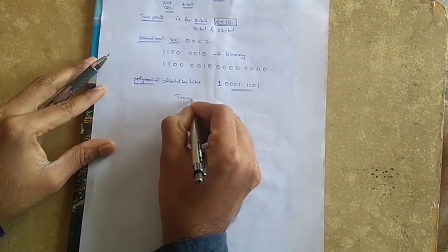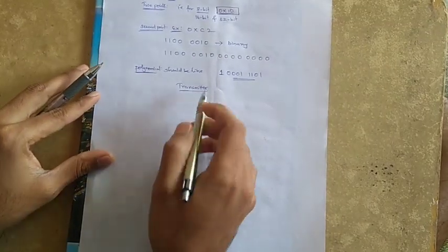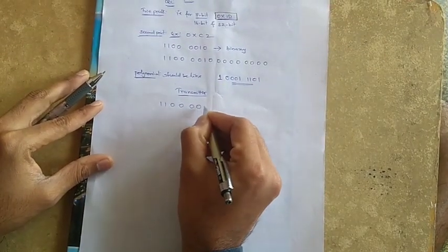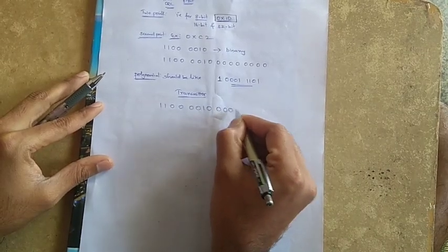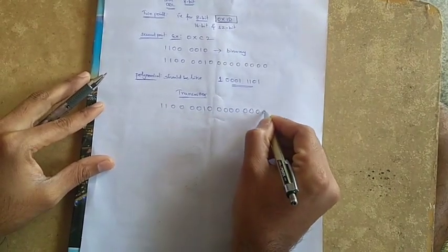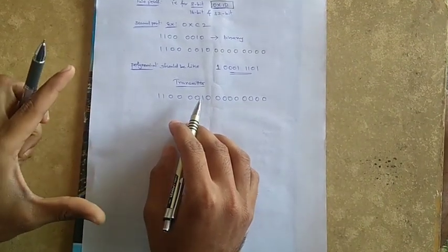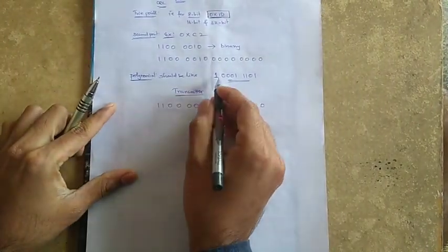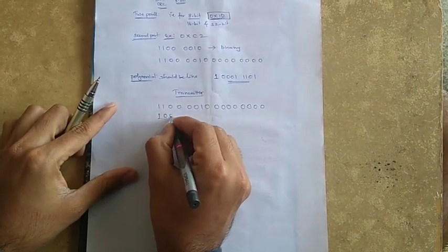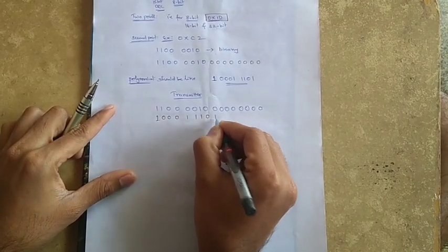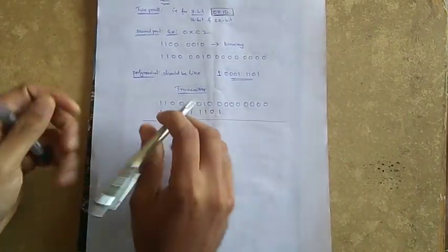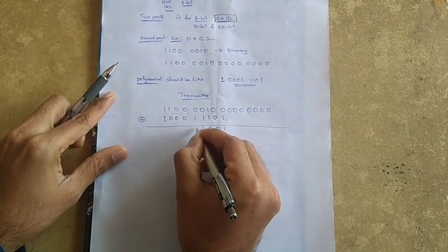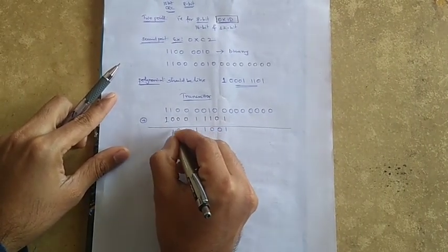First, on the transmitter side, the number I consider is C2, followed by 8 zeros. In this division, we are only concerned about the remainder — I am not bothered about the quotient. The polynomial has the first bit as MSB, then 1D. Division is simply XOR, so we XOR: 1, 0, 0, 1, 1, 0, 0, 1, 0.